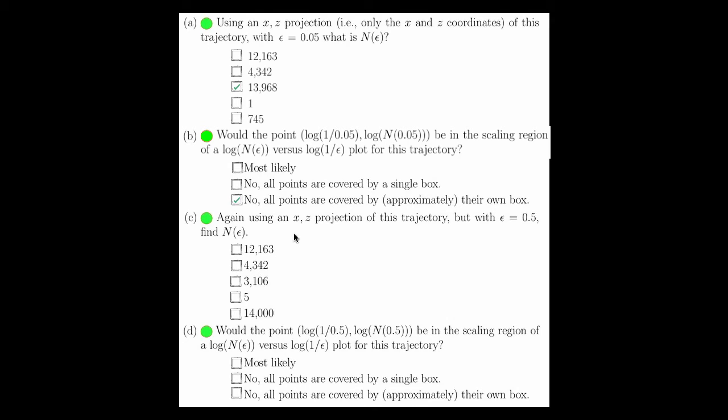For part C, we instead use an epsilon of 0.5. In this case, we get that we have 4,342 boxes. Part D asks the same thing as part B, but instead, epsilon is 0.5.